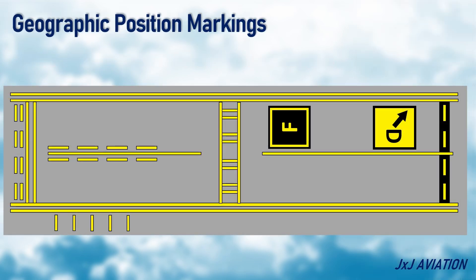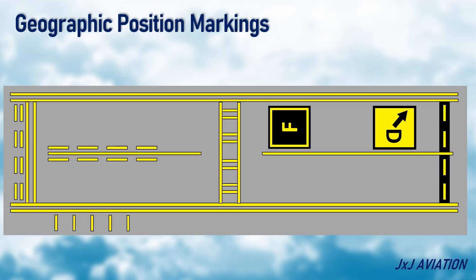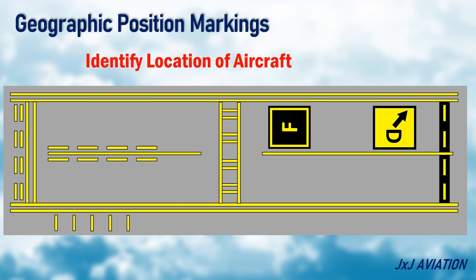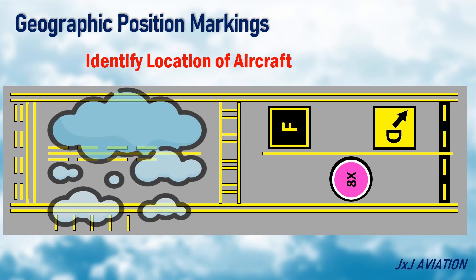Geographic position markings are used to identify the location of an aircraft. They feature a pink circle with a black and white border and black text. The text may be a number and letter, or only a number. These markings are only used during low visibility operations.